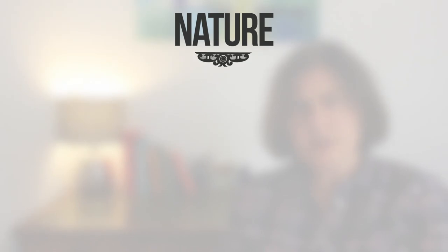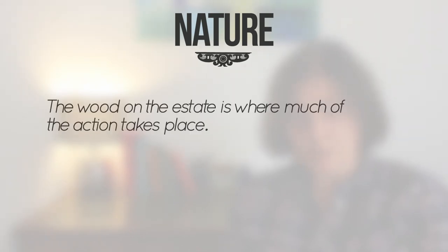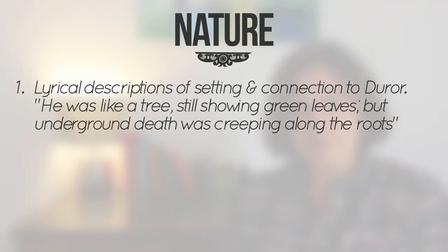Nature. Nature is an important theme in the novel, not least because the wood on the estate is where much of the action takes place. Lyrical descriptions and evocative imagery are used to describe the setting, especially of the wood — "the mottled yellow of the chestnuts, the bronze of beech." Moreover, the imagery of the tree to convey the way in which madness is silently consuming Duror, without it being obvious to the others, is extremely effective: "He was like a tree, still showing green leaves, but underground death was creeping along the roots."